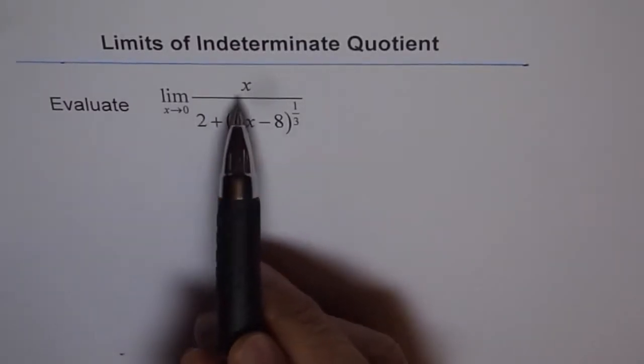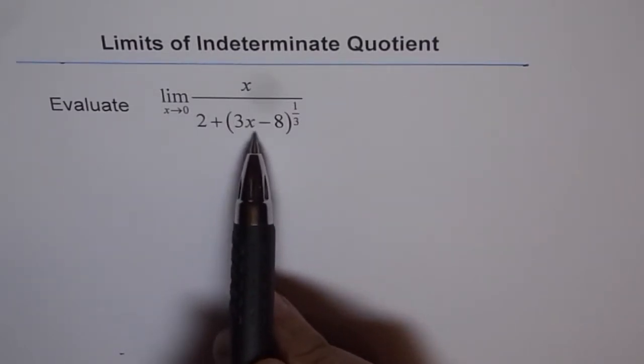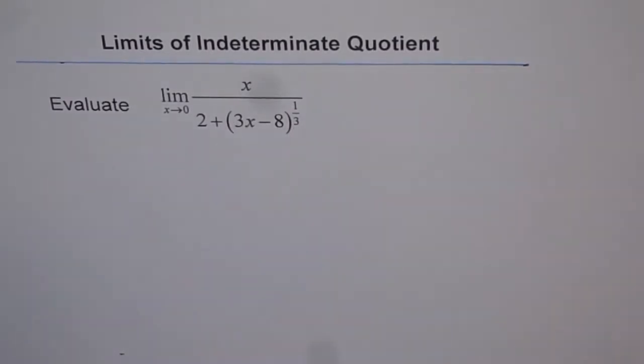Evaluate limit as x approaches 0 of the function x divided by 2 plus, within bracket, 3x minus 8 to the power of 1 over 3.